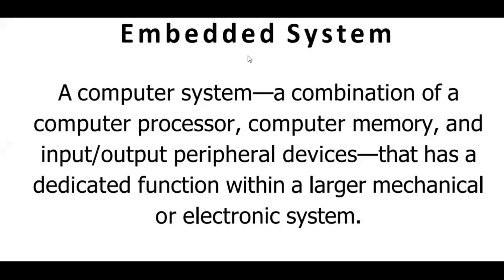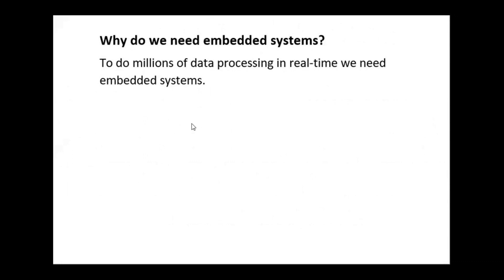An embedded system contains a computer processor, memory, input/output and peripheral devices. It is a large mechanical or electronic system with a dedicated function. This raises the question: how do we implement an embedded system?